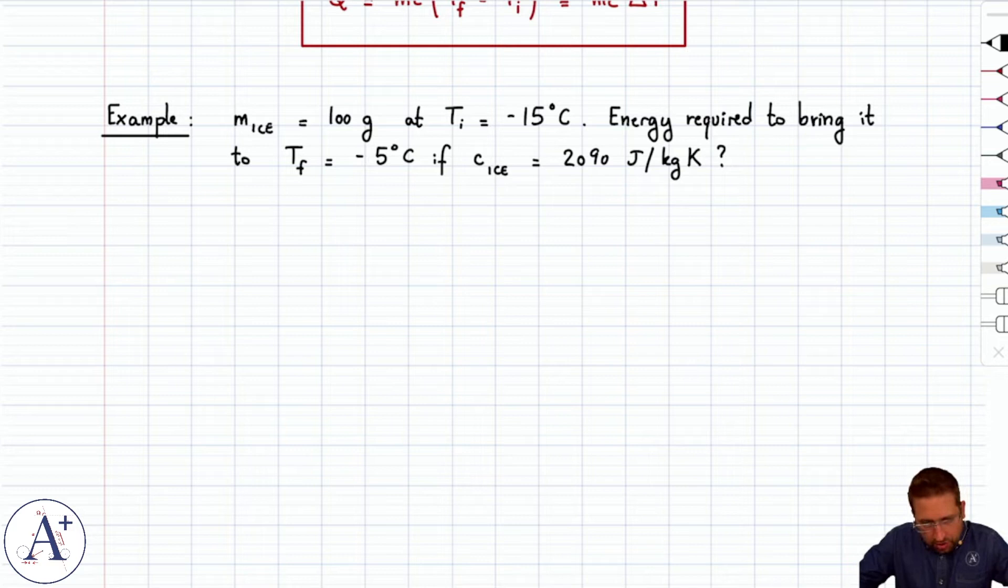So we can compute Q, the amount of heat required to increase the temperature of our block of ice by 10 degrees Celsius. That would just be mc delta T.